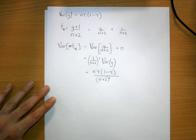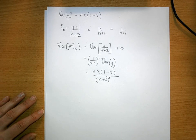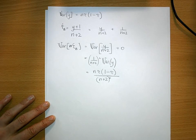And that's the variance of the Bayesian estimator of tau, the proportion.